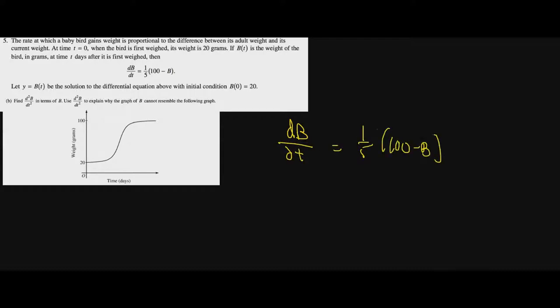Next: find the second derivative of b and use it to explain why the graph of b cannot resemble the given graph. We start with db/dt = (1/5)(100 - b) and distribute the one-fifth: db/dt = 100/5 - (1/5)b, which is 20 - (1/5)b.